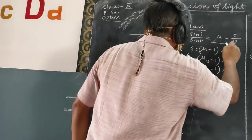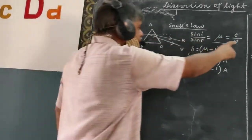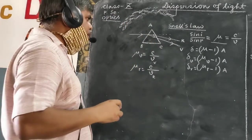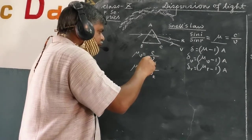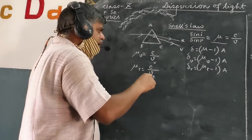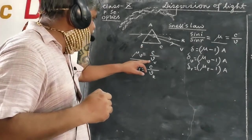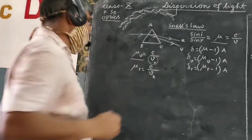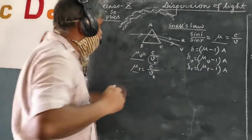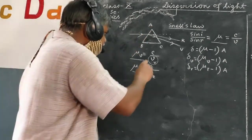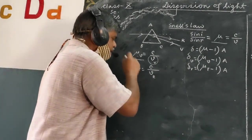We can also write that the refractive index of glass is equal to C by V, where C is the velocity of light in air and V is the velocity of light through glass. In white light, different colors are present — violet, indigo, blue, green, orange, red, etc. So for violet we can write mu_V = C / V_V, that is velocity of violet color of light. And for red we can write mu_R = C / V_R, for the same glass. For violet it has the value of mu_V, the refractive index of glass. For red color it has the value of mu_R — these two are different.